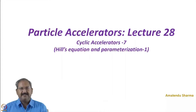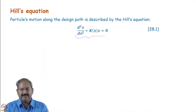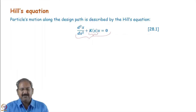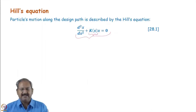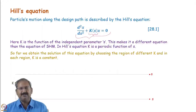In the previous lecture, we studied a solution method of the Hill's equation that was based on matrices. Now we will see there is another way of solving the Hill's equation. What we did earlier was reduce this equation to a simple harmonic oscillator equation by keeping K constant in different elements, dividing the complete optics into pieces. Inside each piece, such as a magnet, K is constant and we solve that equation just like the simple harmonic oscillator. This method, which leads to matrices, is also known as the piecewise solution of the Hill's equation.